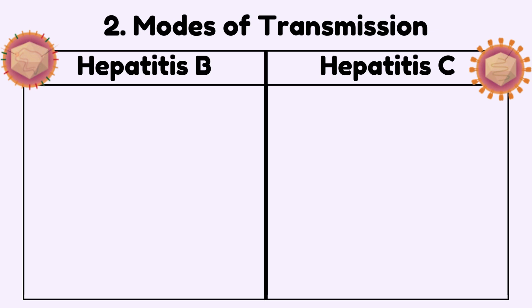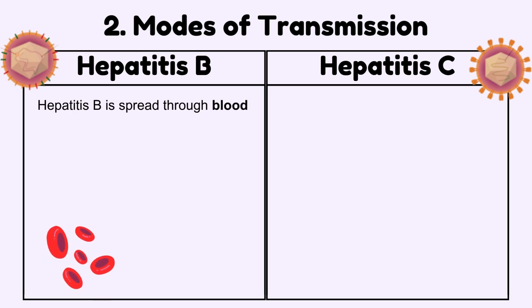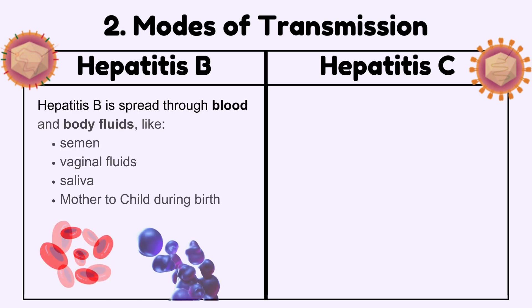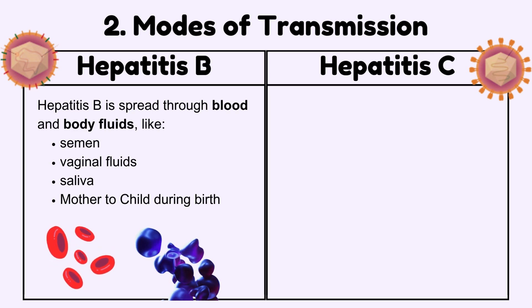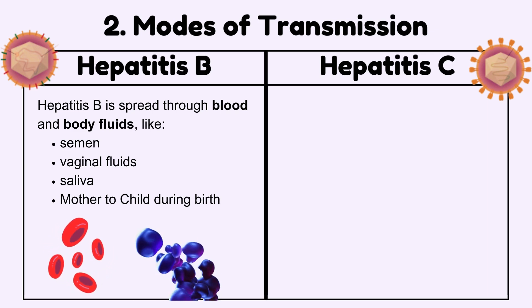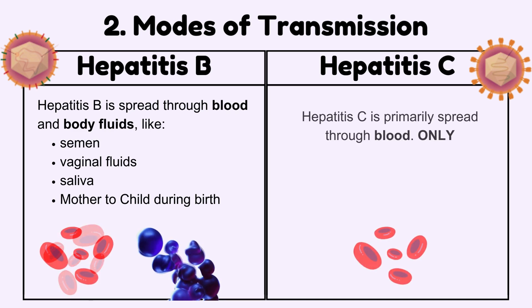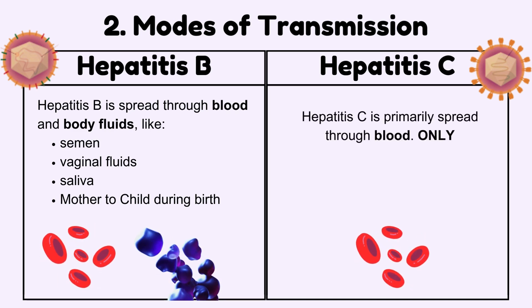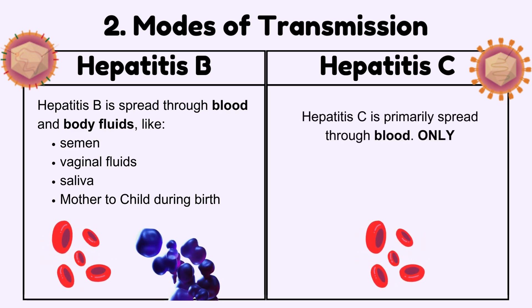Modes of transmission: Hepatitis B is spread through blood and body fluids like semen, vaginal fluids, and saliva, and from mother to child during birth. While Hepatitis C is primarily spread through blood.